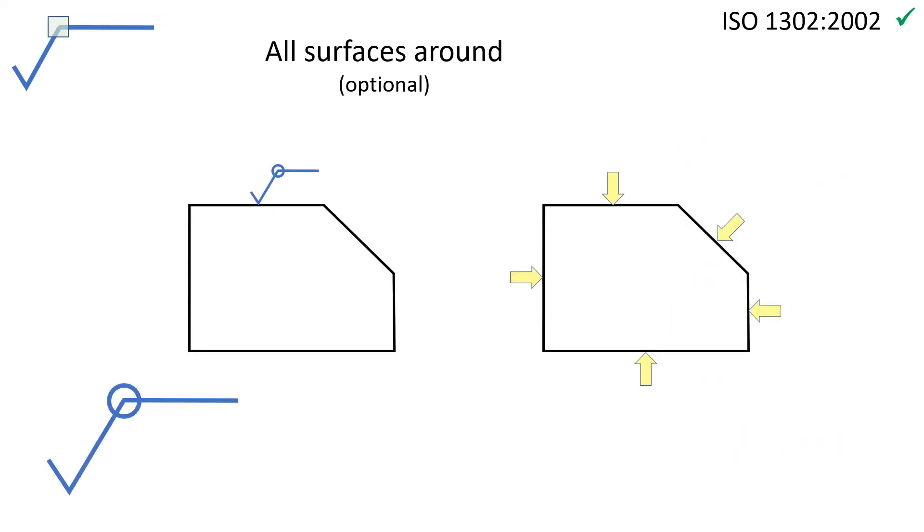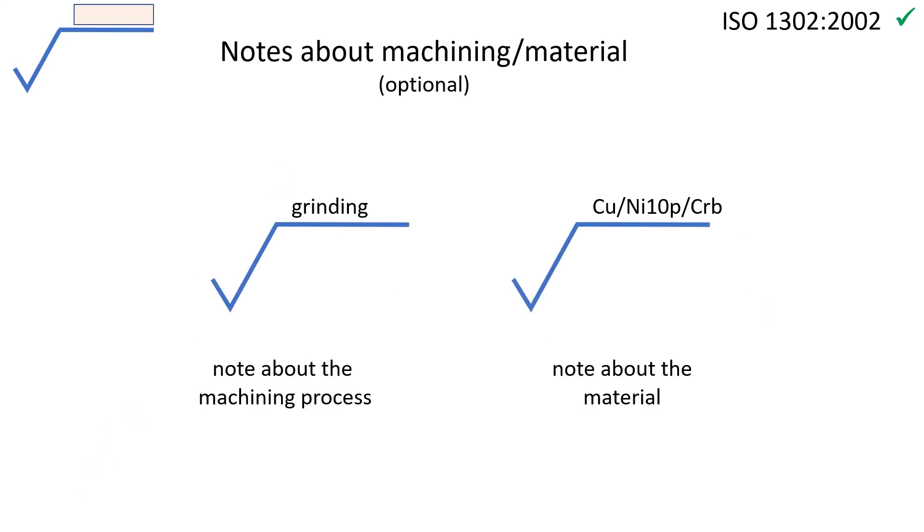When the specification applies on all surfaces around an object, a small circle can be added at the corner between the horizontal and oblique bars. And additional indications can be written above the horizontal bar about machining or material composition.